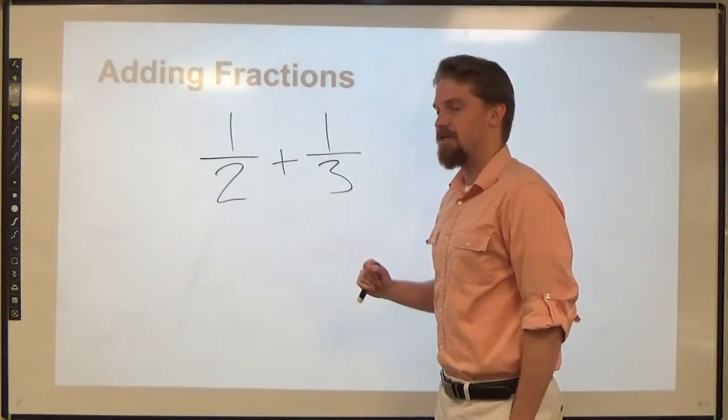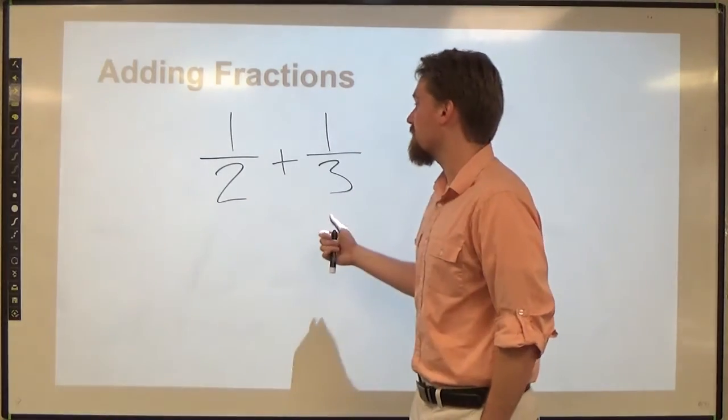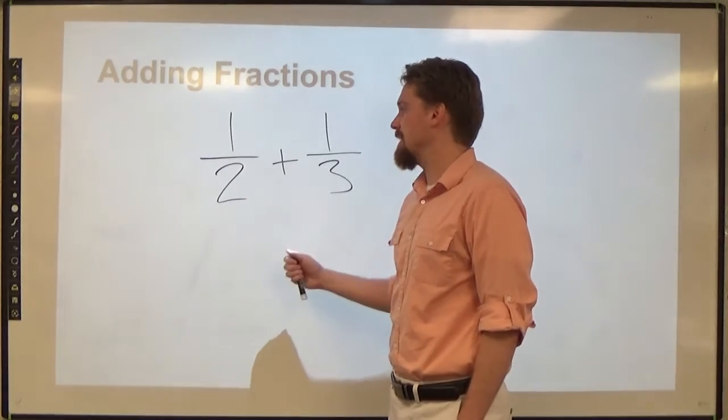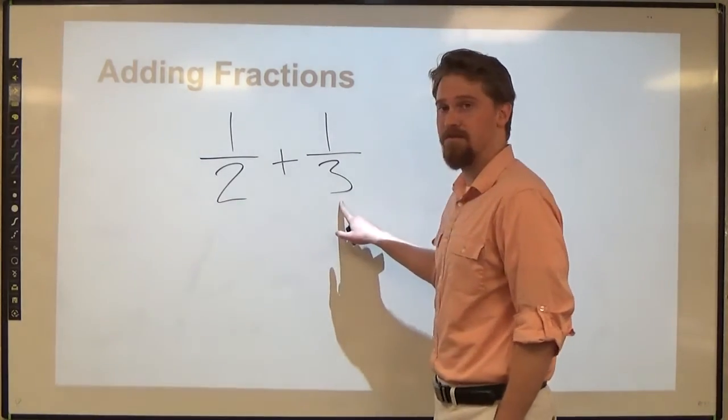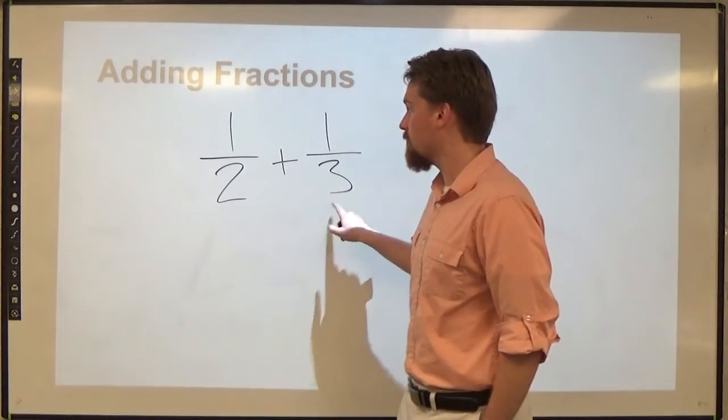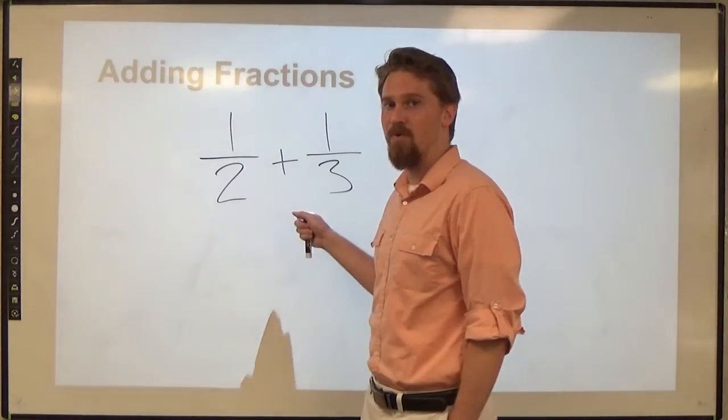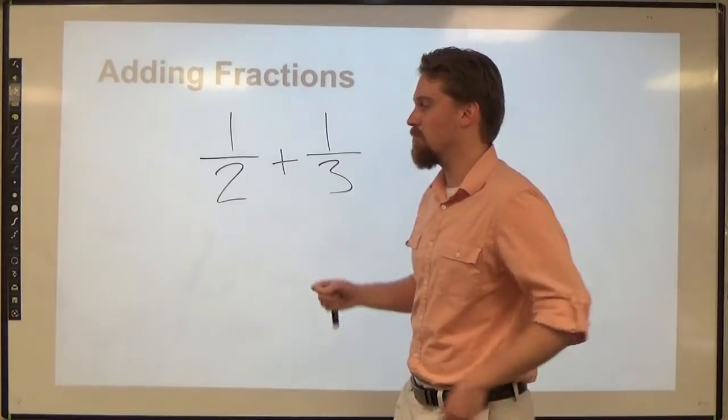The easy way to do that is to go to all the least common multiple stuff that you probably just learned and realize that 2 and 3 are both going to have the same multiple of 6 as its least common multiple.